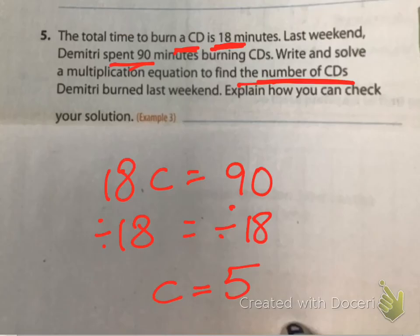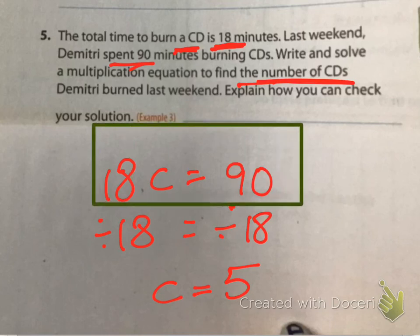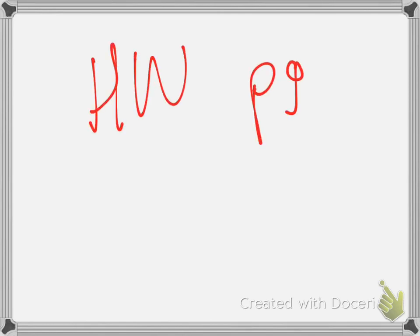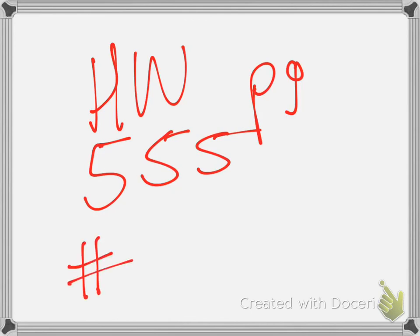So, when we're writing these equations, notice that we have a number and a variable on one side and then a number on the other. That is how it's going to be the best way to write these problems. You must always show your work. You don't show your work, you don't get full credit. That's just the deal. Your homework is page 555 and it's going to be numbers 1 through 11.